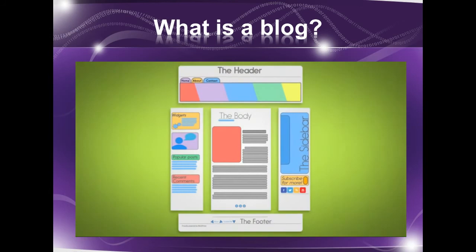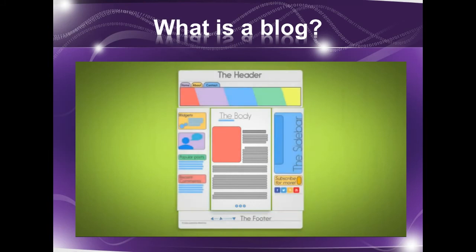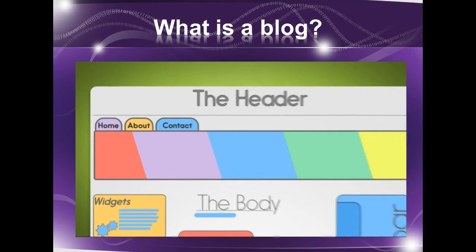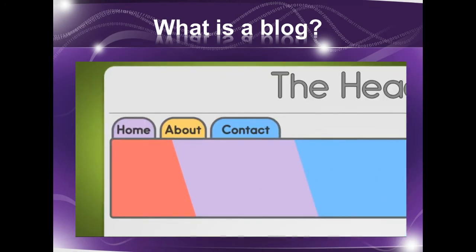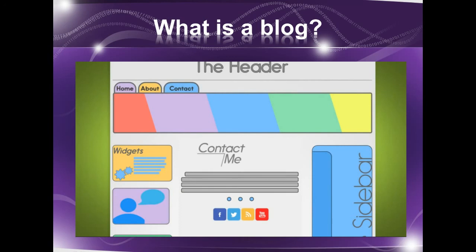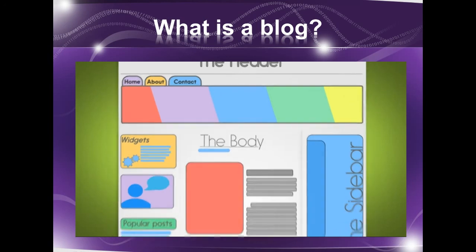Most blog themes are made up of four main sections: the header, the sidebar, the footer, and the body. The header is comprised of your blog's title or logo and your main navigation menu. The menu is the way guests can easily navigate the content of your site, linking readers to the various content and pages found on your blog.